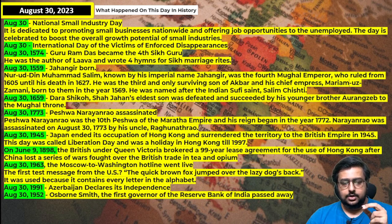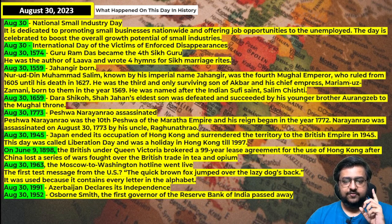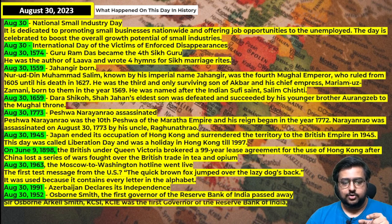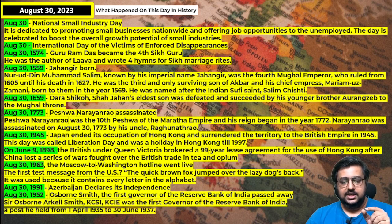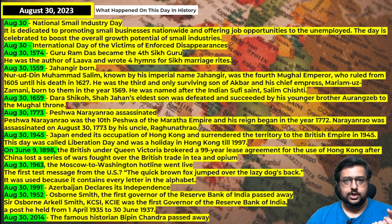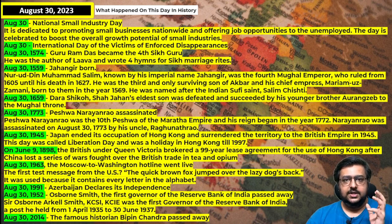Two important death anniversaries fall on August 30. Osborne Smith, the first Governor of the Reserve Bank of India — which was formed in 1934 under the RBI Act 1934 — died on August 30, 1952. Also, Bipin Chandra, the well-known historian who wrote history textbooks widely followed by students, passed away on August 30, 2014.